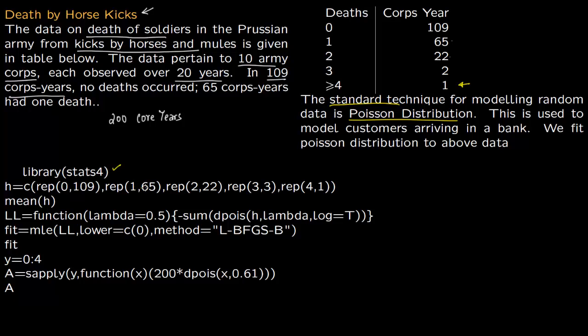Then 65 corps-years had one death, so you repeat 1 65 times. In 22 corps-years there were two deaths, so repeat 2 22 times, and you make this data set.